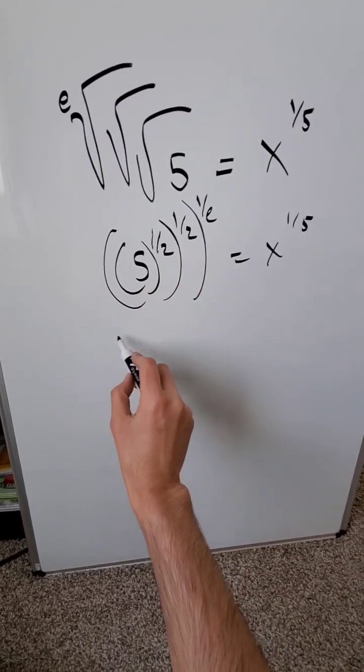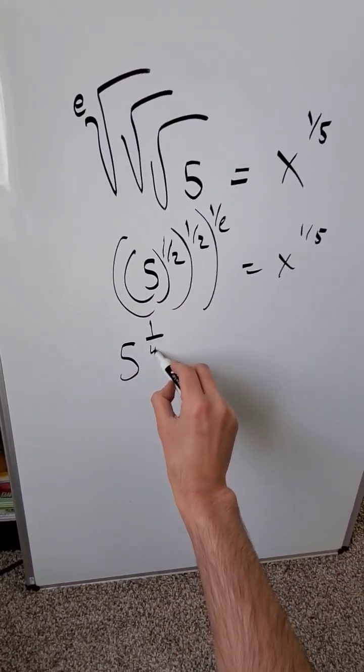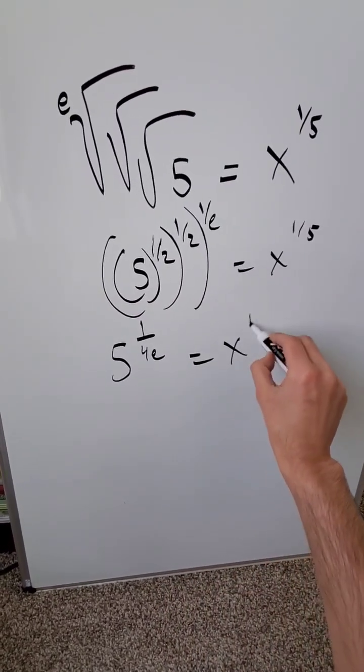You can multiply these exponents across. I have 5 to the power of 1 over 4e is equal to x to the power of 1 over 5.